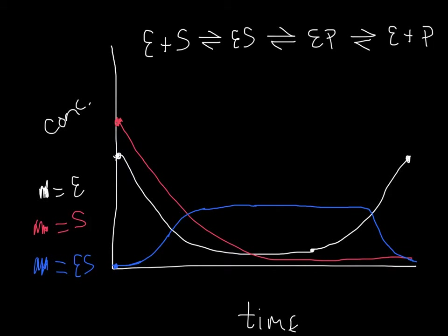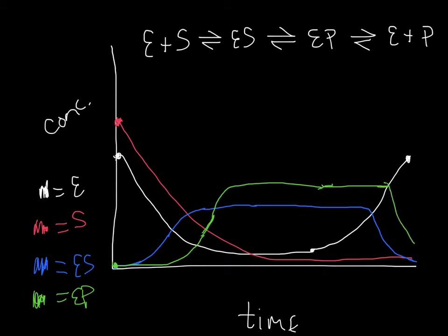For the enzyme-product complex, EP, its initial concentration is also zero. It will have a longer lag than ES because you have to make ES first. Then it goes up, and its plateau may stay a little longer because you use up all the ES first. Eventually EP also goes down to approach zero.